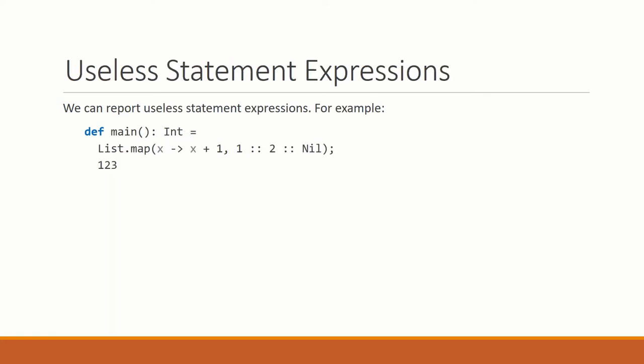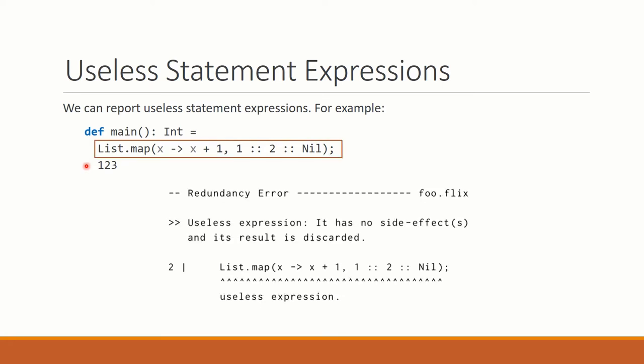We can also use the type and effect system to rule out nonsensical programs. Here is a small main function. There is a list consisting of the elements 1, 2, and then we apply the list map function mapping the function x plus 1 over the elements of the list, then we discard the result of this computation returning 1, 2, 3. If we try to compile this program with our implementation, it will tell us that there is a useless expression. This list map expression is redundant. The fact that this expression is redundant is because this function we map over the list is pure, so the entire expression is pure, and computing a pure expression and throwing the result away is useless.